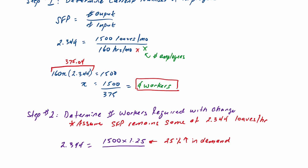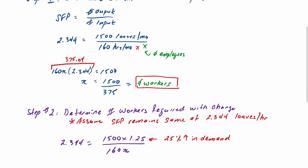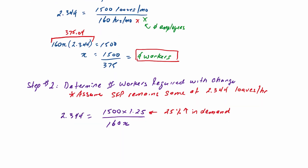We divide by 160x because that doesn't change, which means 375x equals 1875 loaves, where x equals 1875 divided by 375, and that is 5 workers.